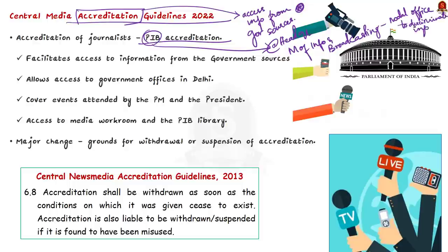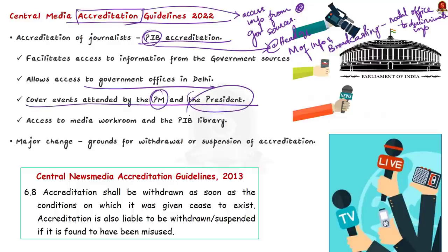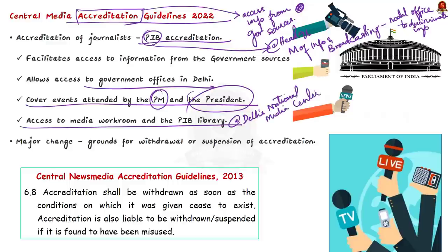This accreditation is important for journalists because it allows access to government offices in Delhi. It enables them to cover events attended by the Prime Minister and the President. They can also access the media workroom and the PIB library at Delhi's National Media Center. Previously there were also guidelines on who should be provided accreditation — those were the 2013 guidelines.